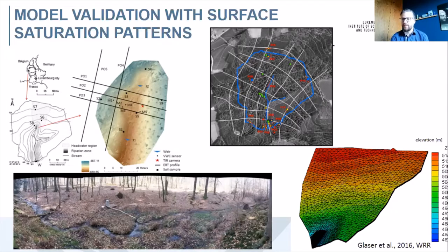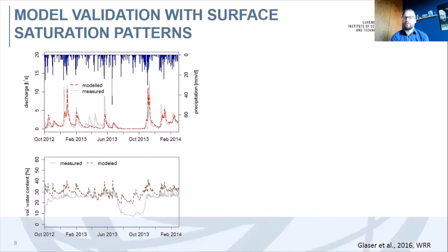We have a very detailed grid resolution in the riparian area and stream channel, simulating processes on centimeter scale, while choosing a wider resolution further away from the channel. We wanted to test how we can improve hydrological models by accounting for surface saturation. The input data includes precipitation, and we show observed and simulated discharge over one and a half to two hydrological years, with simulations of soil moisture at the bottom.